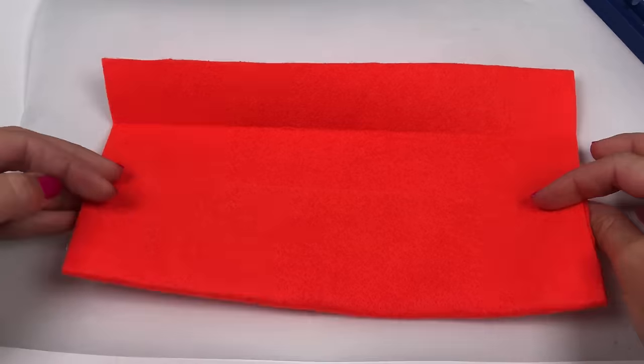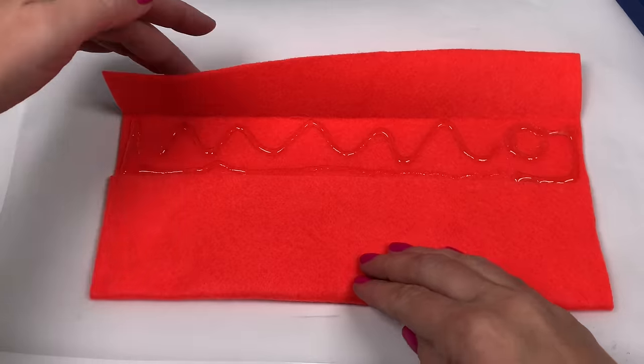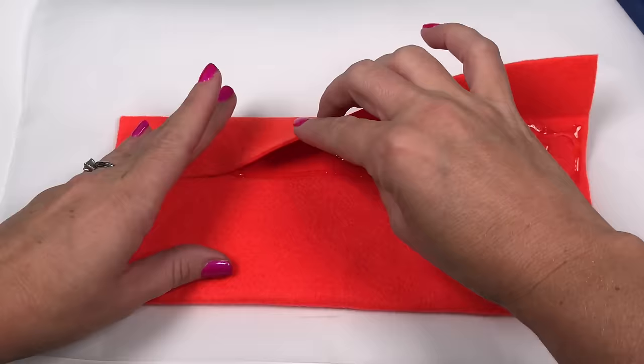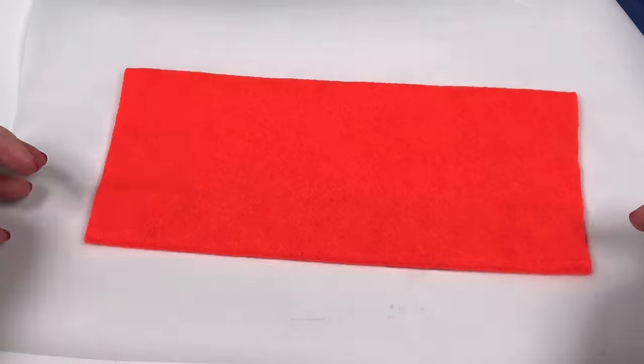For the bench cushion, take a piece of felt and cut it to size. If you wanted to have a little more cushion, you can double it by folding it over and gluing it onto itself. That way it's two layers of felt.